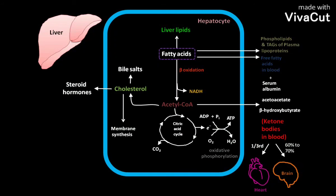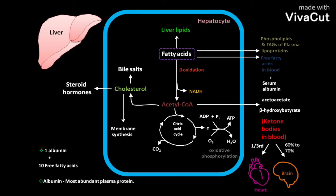In the heart and skeletal muscle, free fatty acids are oxidized to produce energy. One albumin molecule can carry up to 10 molecules of free fatty acids. Albumin is the most abundant plasma protein.